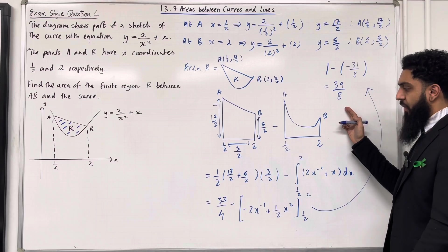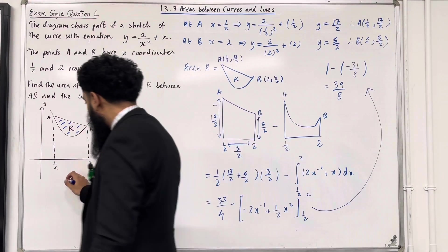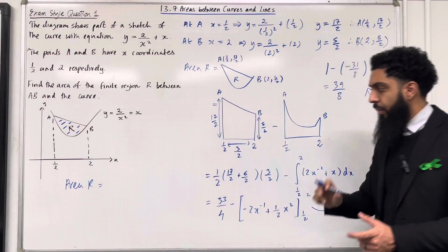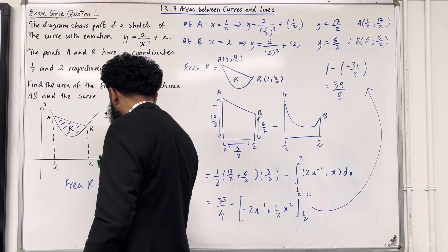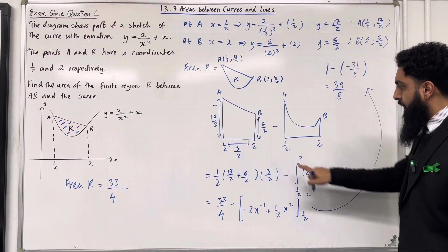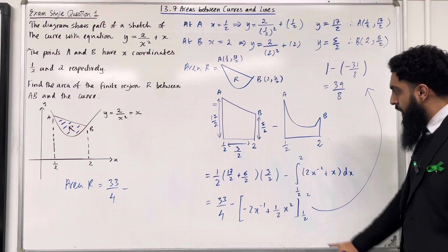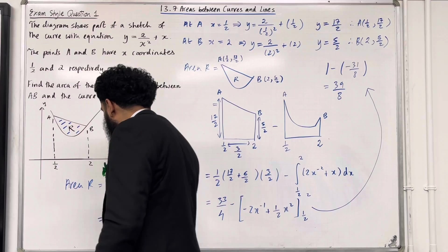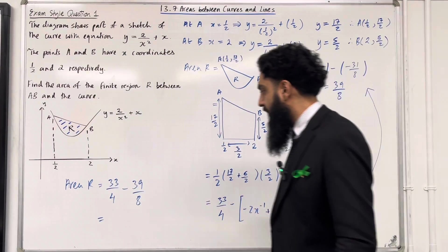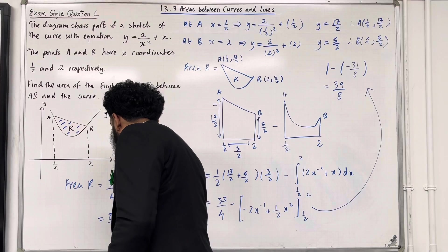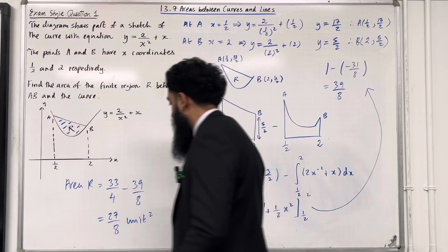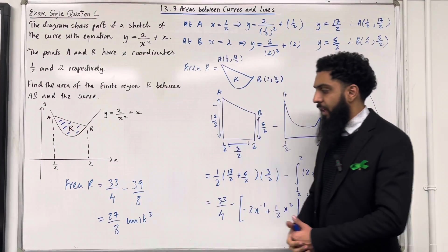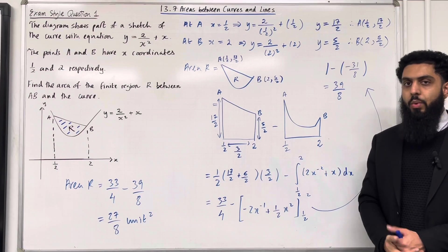So this square bracket evaluates to 39 over 8. Therefore, the area R is the area of the trapezium, which is 33 over 4, minus the area under the curve from x equals one half to x equals 2, which was 39 over 8. Subtracting these two fractions gives 27 over 8 unit squared. So the area R, bounded by the line AB and the curve, is 27 over 8 unit squared. This completes Exam Style Question 1.